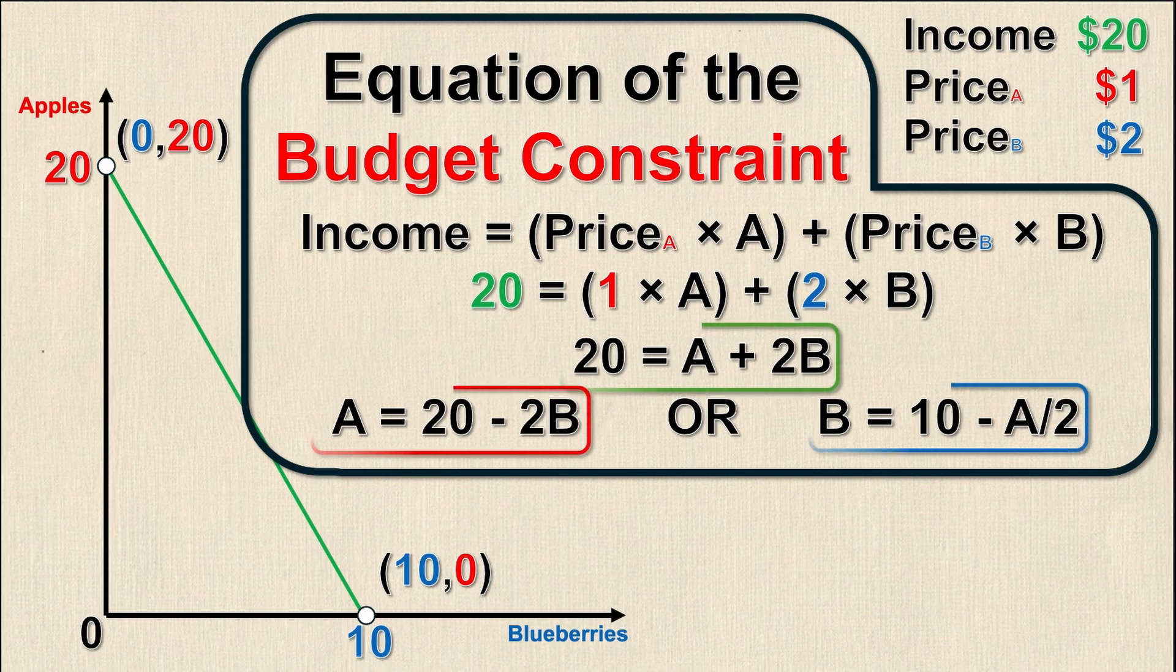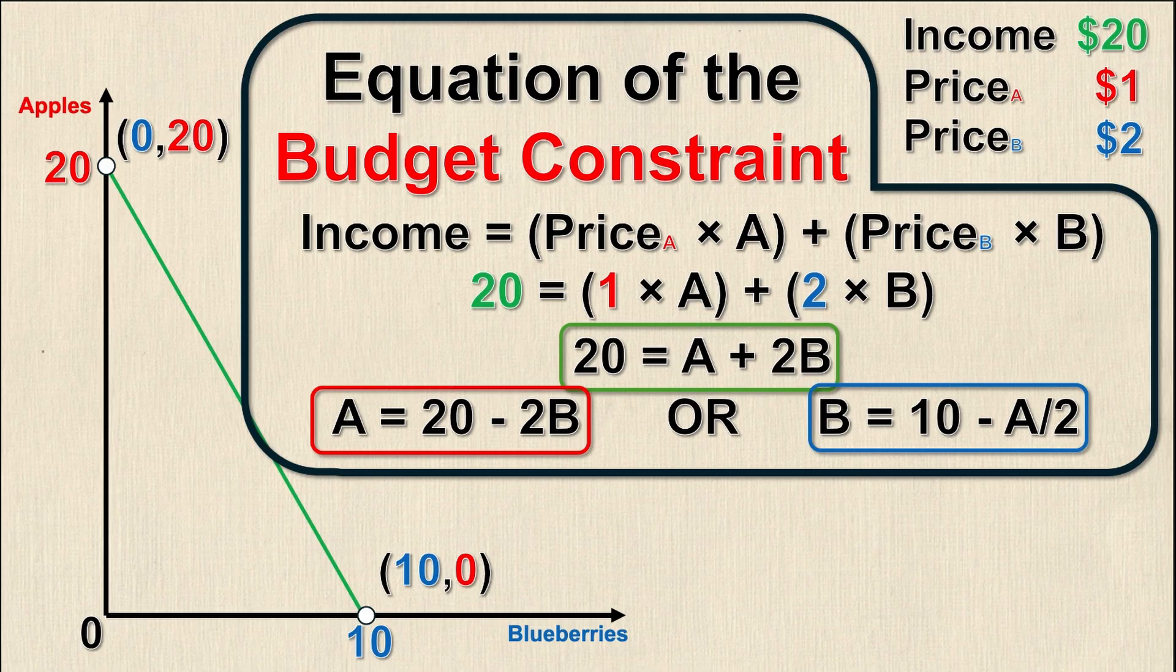All three of these are the budget constraint. I would use each depending on the circumstance. If I was given B and wanted to find A, I'd use the red highlighted version, or vice versa. If I was given units of apples and wanted to calculate blueberries, I'd use the blue one. The green one, realistically you're probably not going to use it that much, but it's there if you want.